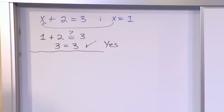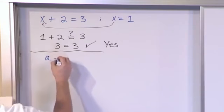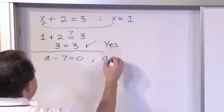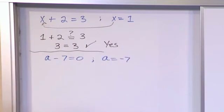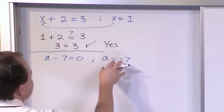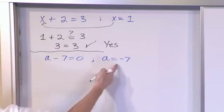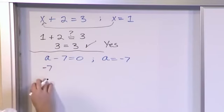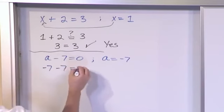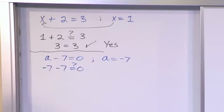So let's do another one of these. Let's say we have a minus 7 is equal to 0, and let's say that a is equal to negative 7. We're trying to figure out, is this a valid solution or is this the solution to this equation? So let's put it in there. Negative 7 for a minus 7? Is that equal to 0?